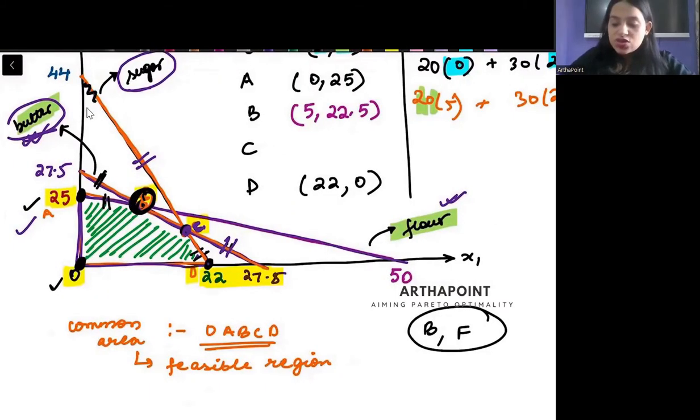But this is my sugar constraint. I am inside the sugar constraint. Am I maximized at a point where I am inside this sugar constraint? Inside the sugar constraint means that I am satisfying it with inequality. I am not completely using the sugar, only using some part of the sugar.